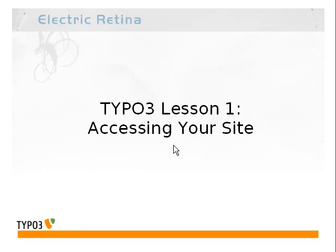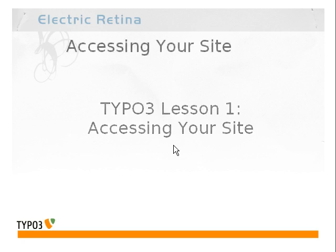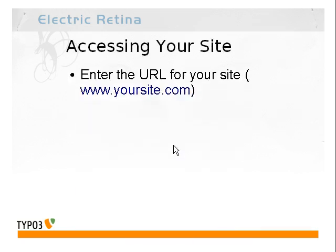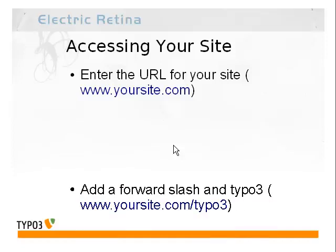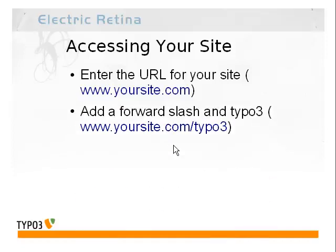Welcome to TYPO3 lesson 1, where we're going to show you how to access the TYPO3 interface for your site. The first step is to enter the actual URL for your site, the www dot whatever your site is, and then add a forward slash and then TYPO3 at the end of that. That'll bring up the actual login interface for the TYPO3 backend.